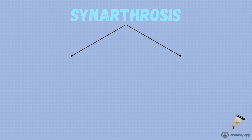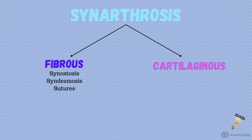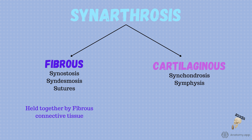Synarthrosis has two classes: fibrous and cartilaginous. Synastosis, syndesmosis, sutures are all called fibrous — these joints are held together by fibrous connective tissue. Synchondrosis and symphysis are both called cartilaginous — these joints are held together by cartilage.